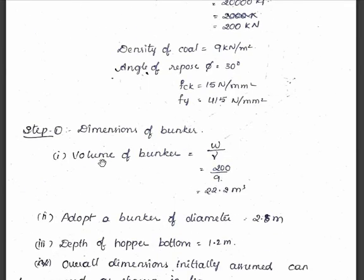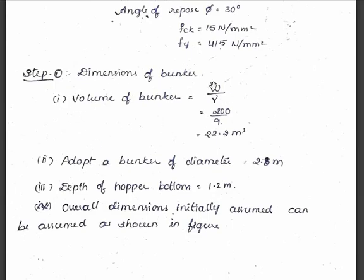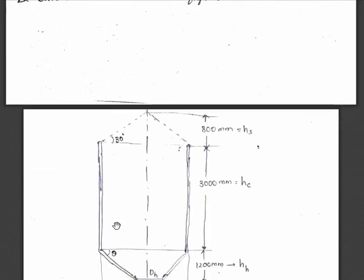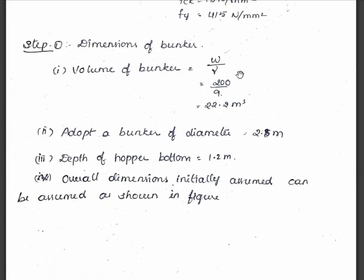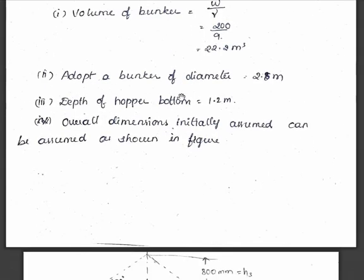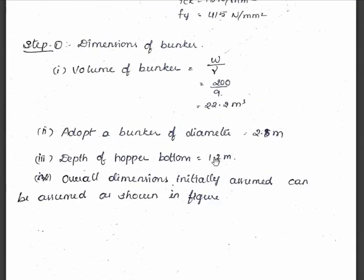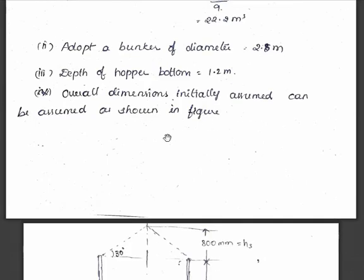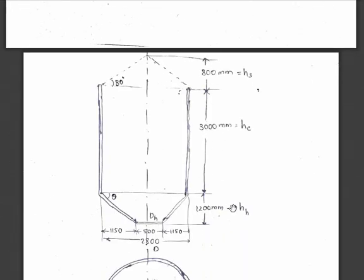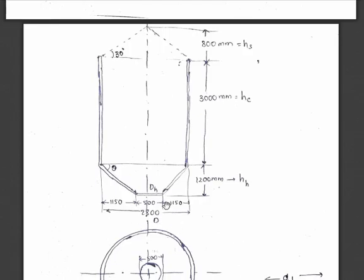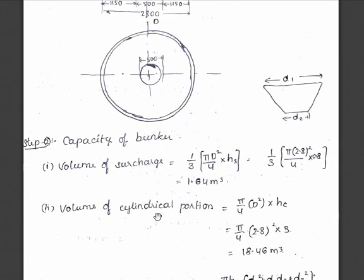Step 1 is about dimensions of the bunker. First, we calculate the required volume: volume = weight / density = 200 kilonewton / 9 kilonewton per meter cube = 22.2 meter cube. Now we assume initial dimensions. I am assuming the diameter as 2.8 meter, depth of the hopper bottom as 1.2 meter. The overall assumed dimensions are shown in the figure: surcharge 800 mm, 300 mm, 3 meter height, 1.2 meter hopper depth, total diameter 2800 mm, and hopper opening 500 mm.